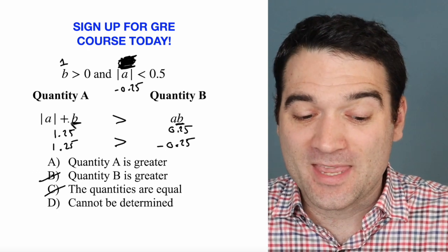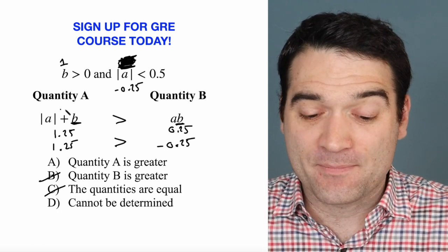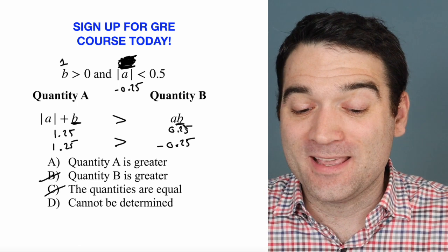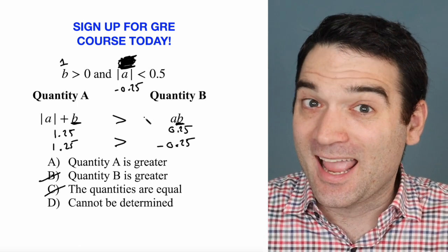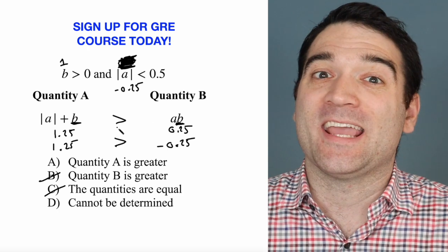So if I'm starting at B and I add a number to it, it's going to get bigger. Whereas over here with quantity B, I start with B and I multiply it by a fraction. So it's going to get smaller.